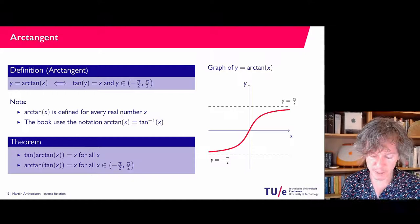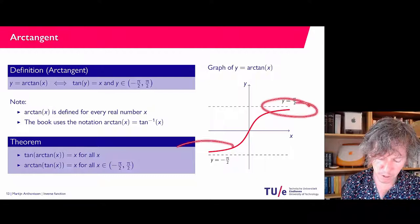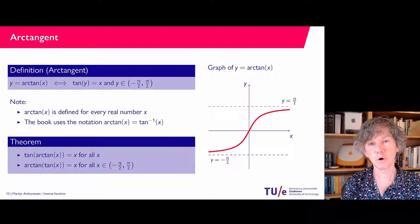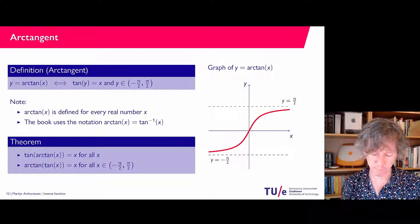If you plot the graph of the arc tangent, you see that it has a horizontal asymptote at y equals pi over two as x goes to infinity, and another horizontal asymptote at y equals minus pi over two as x goes to minus infinity. So the arc tangent has two horizontal asymptotes.